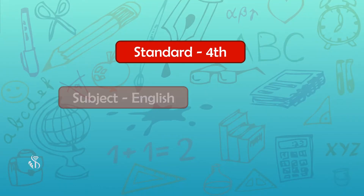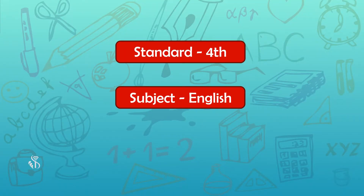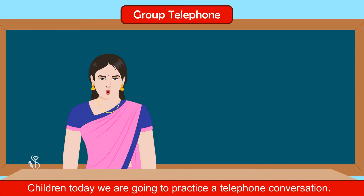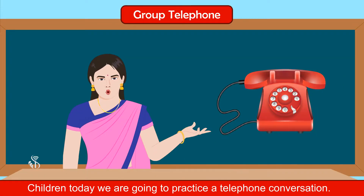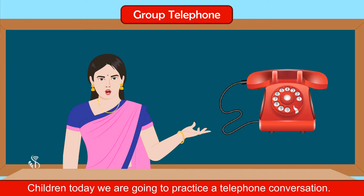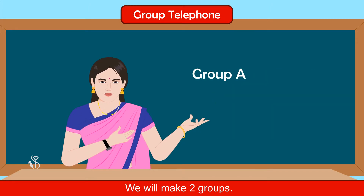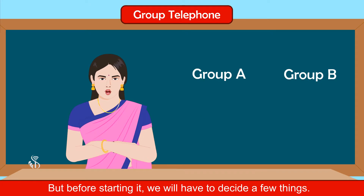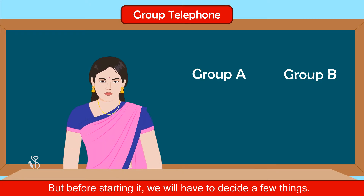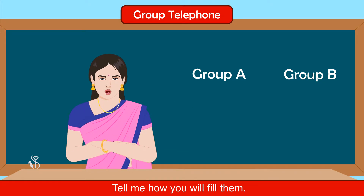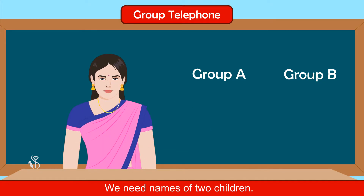Standard four, subject English, chapter: Group Telephone. Children, today we are going to practice a telephone conversation. We will make two groups: Group A and Group B. But before starting, we will have to decide a few things. There are some blank boxes in this lesson. Tell me how you will fill them. We need names of two children.